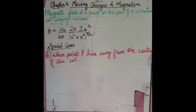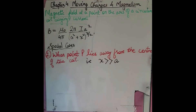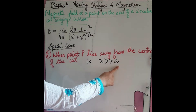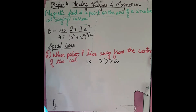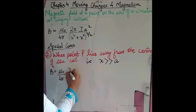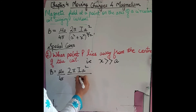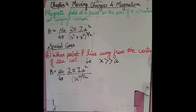Second special case: when point P lies far away from the center of the coil — meaning X is very much greater than A. Since X >> A, we can neglect A. So B = (μ₀/4π) · (2πIA²) / (X²)^(3/2). This simplifies to B = (μ₀/4π) · (2πIA²) / X³. Since πA² is the area of the circle, we can write this as B = (μ₀/4π) · (2IA) / X³.